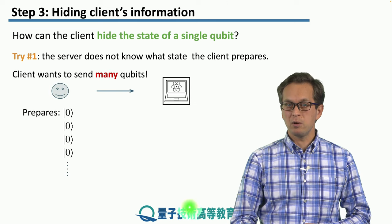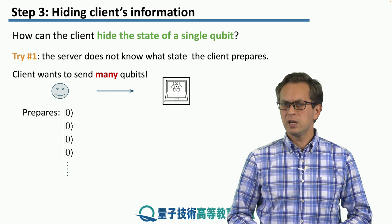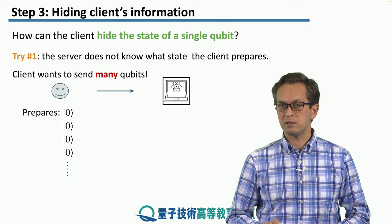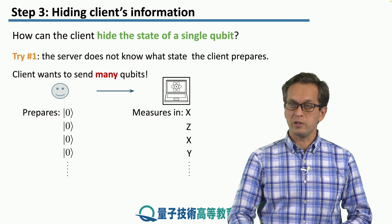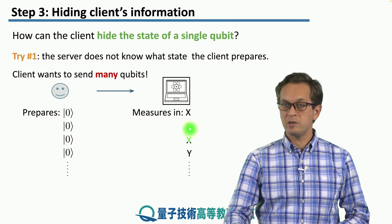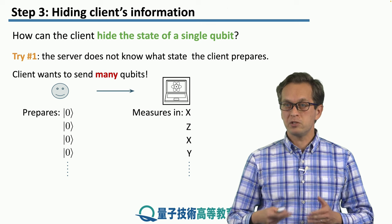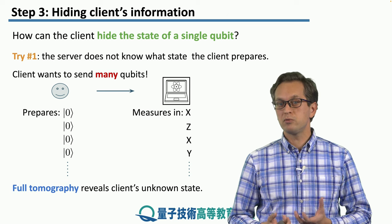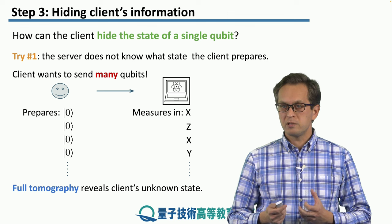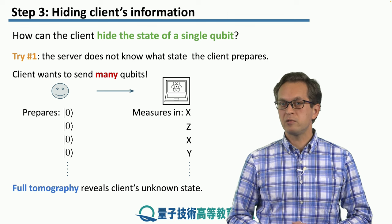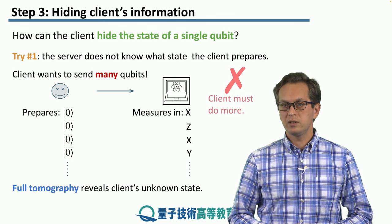The client prepares all of its qubits in the initial state |0, 0, 0, 0⟩ and sends them to the server. The server doesn't really know what the initial state is. But because there are many copies of the qubit, the server can measure the first one in the Pauli X basis, the second in the Pauli Z basis, then in the X basis again, maybe then in the Y basis. By measuring all of these qubits, the server virtually runs full tomography and it reveals the client's unknown state. So this first try — just relying on the fact that the client doesn't communicate what state it's preparing — is not enough.